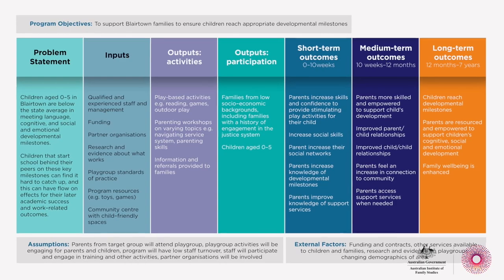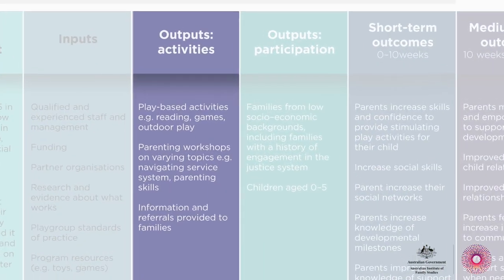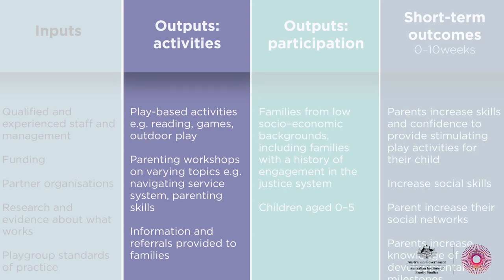If you have a program manual, it will be more straightforward to populate this column. If you don't, you might need to brainstorm with staff who are involved in the program. It can really help to group similar activities together — say you're running a playgroup with lots of different games, you don't need to list every single game; you might group them as 'play-based activities.' You can also come back to review your outputs column after you've identified your outcomes — sometimes that makes it easier to see whether you've missed activities or included non-core ones. Keeping it simple and including only core activities helps tell your program story.